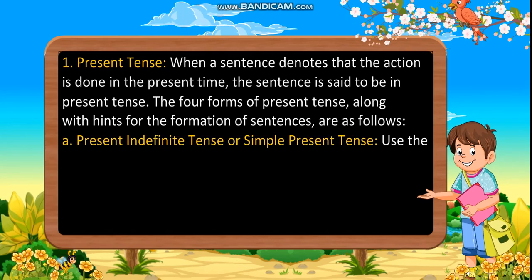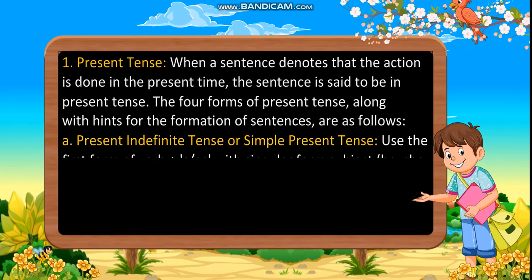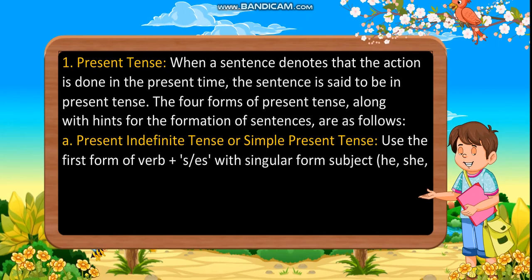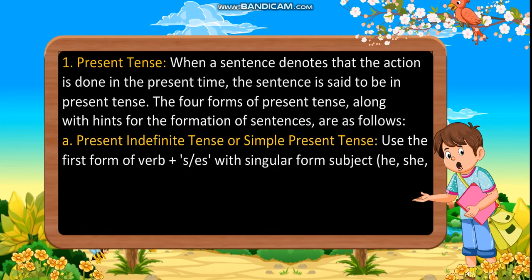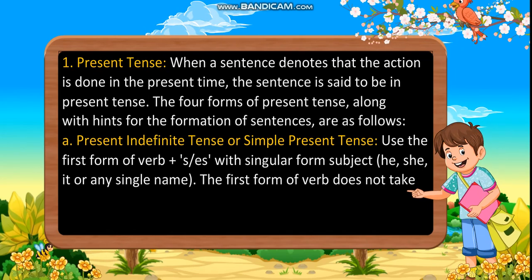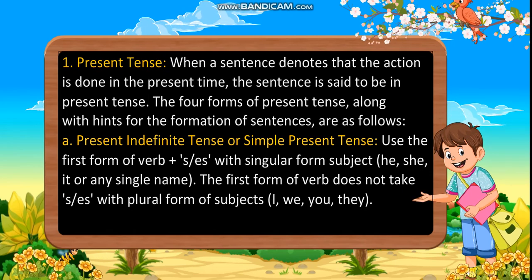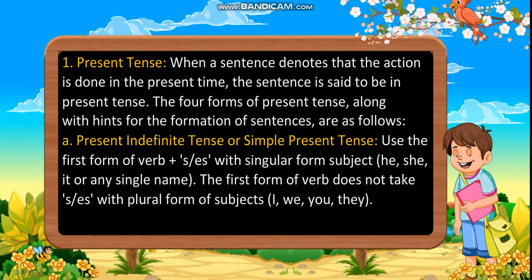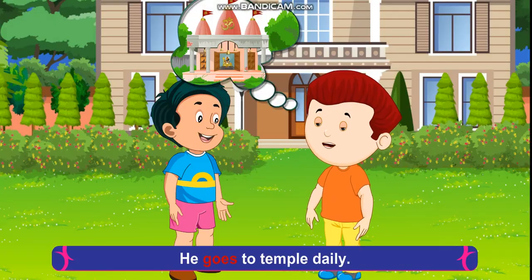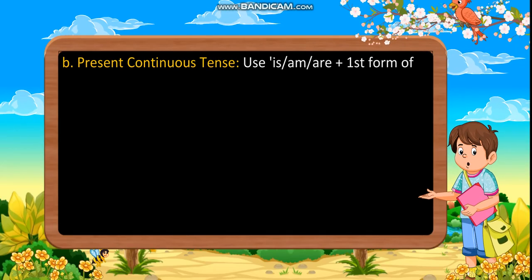Present indefinite tense, or simple present tense: Use the first form of the verb plus S, E, S with singular form subject — he, she, it, or any single name. The first form of verb does not take S or E, S with plural form of subjects — I, we, you, they. Example: He goes to temple daily. We play cricket in the park.